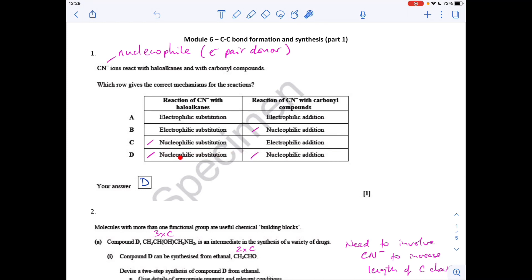So it's nucleophilic substitution when CN minus ions react with haloalkanes, and it's nucleophilic addition when cyanide ions react with carbonyl compounds.